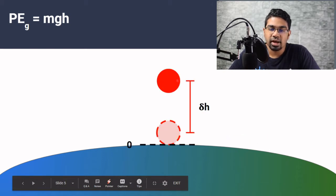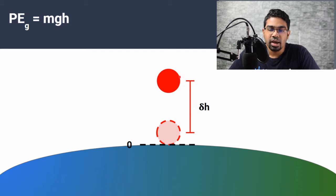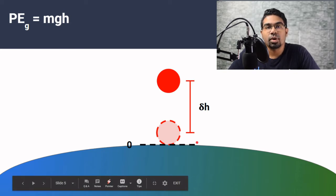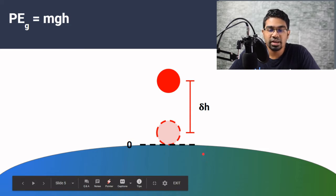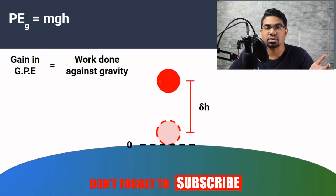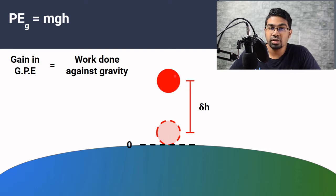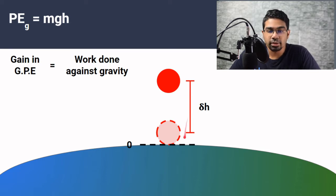When we raise the ball up to height h, there is a positive change in height, delta h. We see this change in height with the surface of the earth as the reference point. This is a key point in gravitational potential energy — there exists a reference point, and when we use mgh, that reference point is the surface of the earth. Gravitational potential energy exists because of gravity, and we can calculate the gain in gravitational potential energy of an object when we raise the ball to a height h.